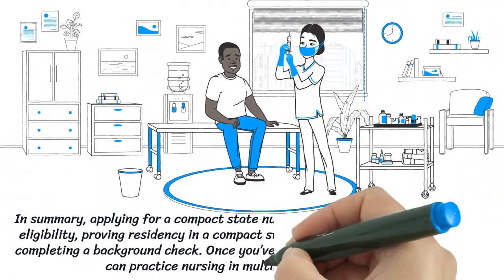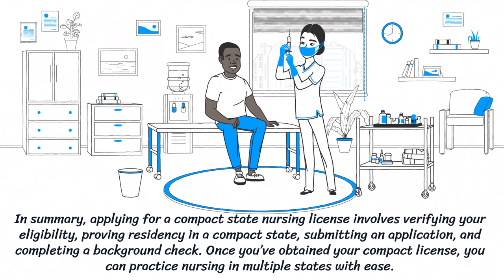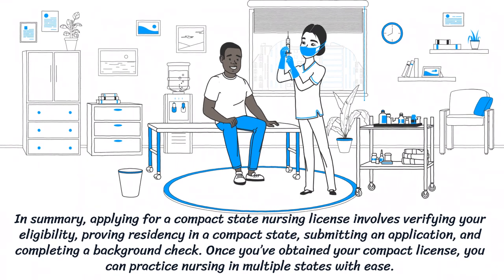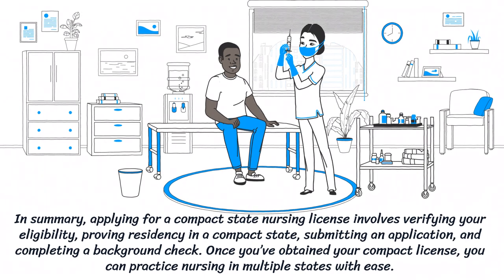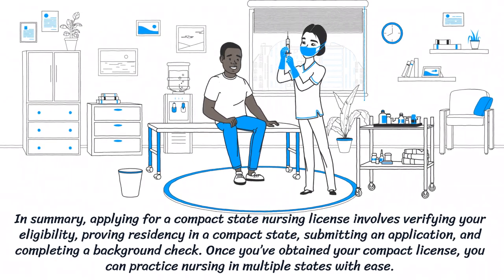In summary, applying for a Compact State Nursing License involves verifying your eligibility, proving residency in a Compact State, submitting an application, and completing a background check. Once you've obtained your Compact License, you can practice nursing in multiple states with ease.